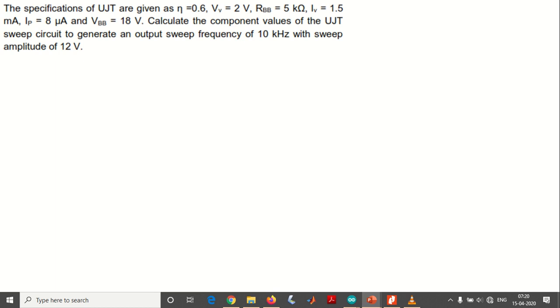Here are the specifications of UJT: eta equals 0.6, VB equals 2 volts, RBB equals 5 kilo ohms, IV valley current is 1.5 milliamps, IP peak current is 8 microamps, and VBB equals 18 volts. Calculate the component values of the UJT sweep circuit to generate an output sweep frequency of 10 kilohertz with a sweep amplitude of 12 volts.